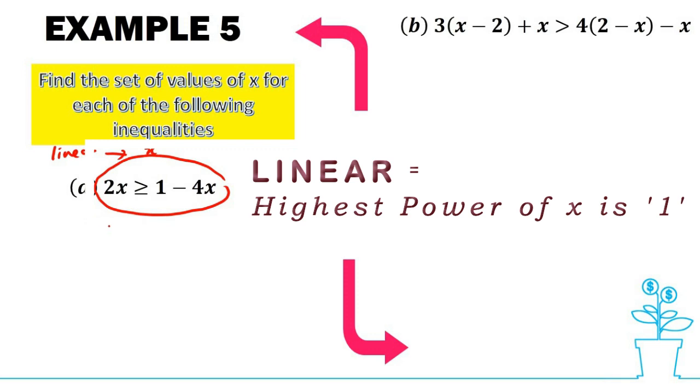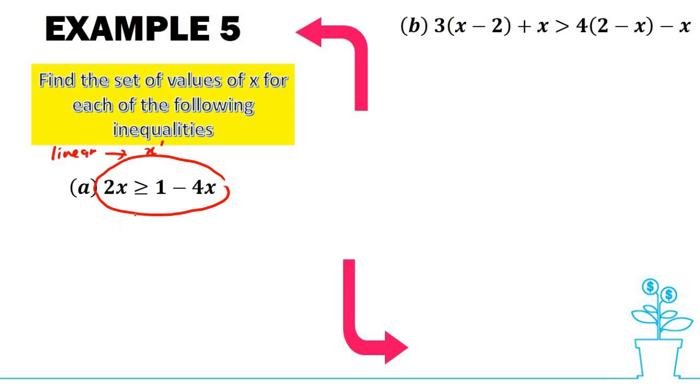What we should do is make x as the subject on the left. Bringing 4x to the left, we would have 2x plus 4x, which is 6x, greater than or equal to 1. So we have x greater than or equal to one over six.